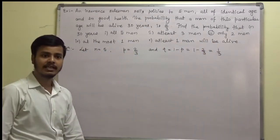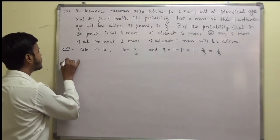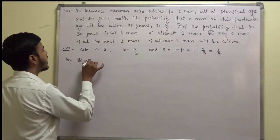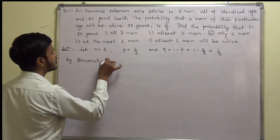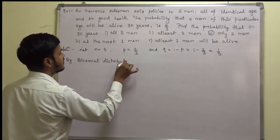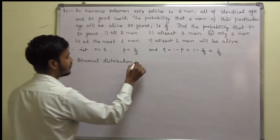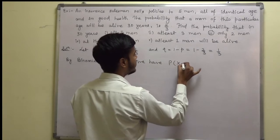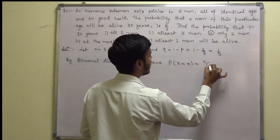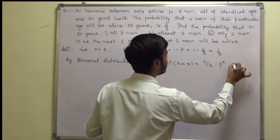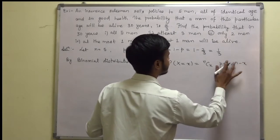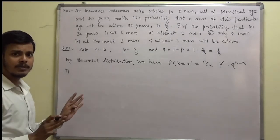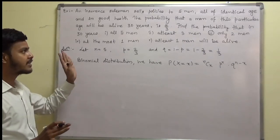We have n equals 5, p equals 2/3, and q equals 1/3. By binomial distribution, we have: probability of X equals x is nCx times p to the power x times q to the power n minus x. Let us find out the answers one by one — these problems are very simple if you understand them.